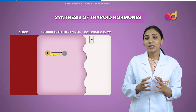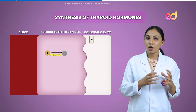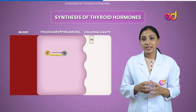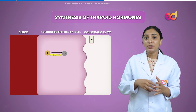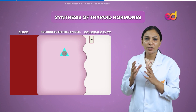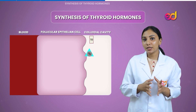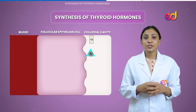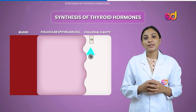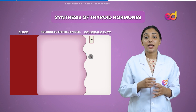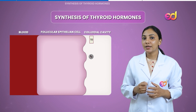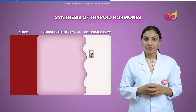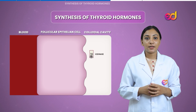The precursor of thyroglobulin is stored in the colloidal cavity, so the synthesis of thyroid hormone takes place in the colloidal cavity. The transport of iodine from the follicular cells to the colloidal cavity is accomplished through a transporter known as pendrin. Following this, the transported iodine binds to the tyrosine ring in thyroglobulin.